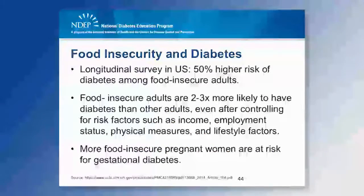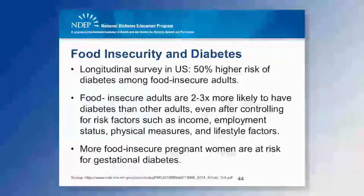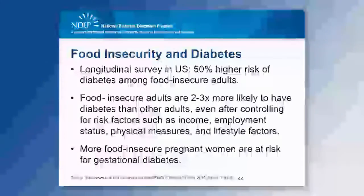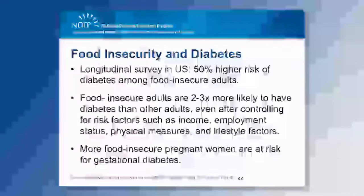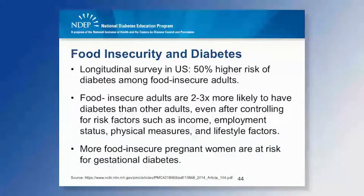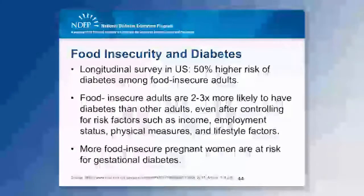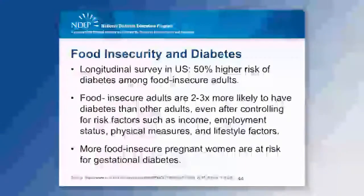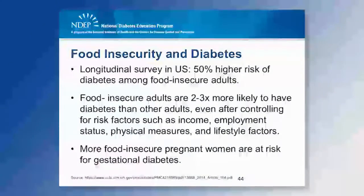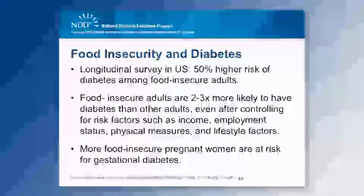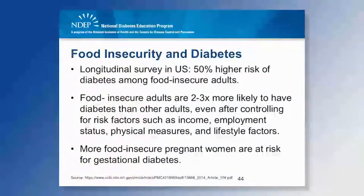Several other studies have shown similar trends. In longitudinal studies, where populations are followed over time, those who were food insecure were 50 percent more likely to have type 2 diabetes. This association held even after accounting for lifestyle factors such as smoking, drinking, physical activity, income level, and employment — food insecure individuals were two to three times more likely to have type 2 diabetes. A similar trend was also shown with food insecurity and gestational diabetes, which can potentially lead to type 2 diabetes long term.